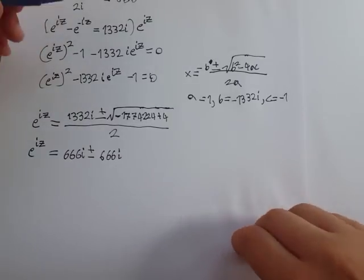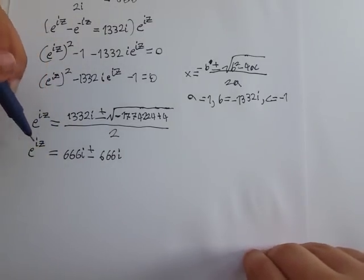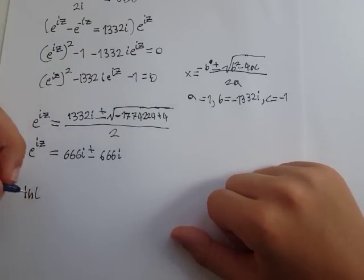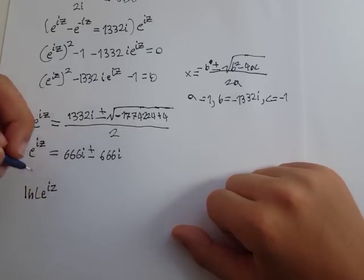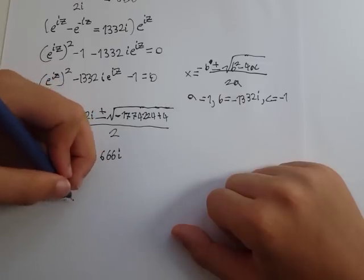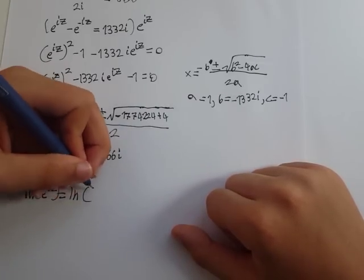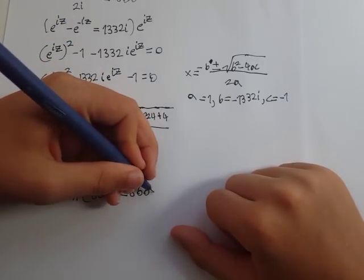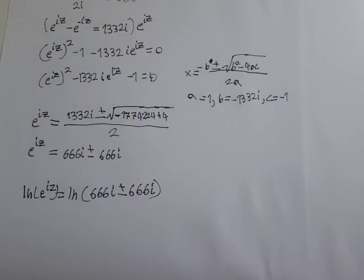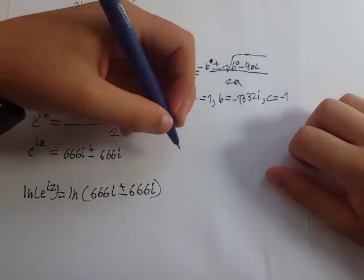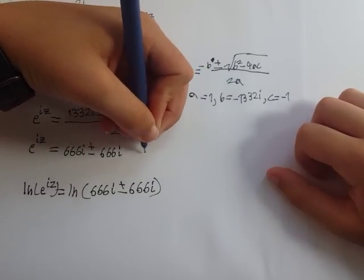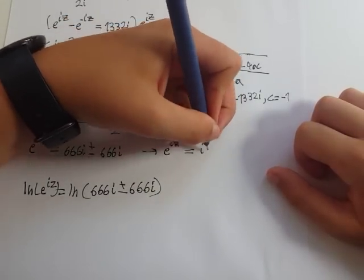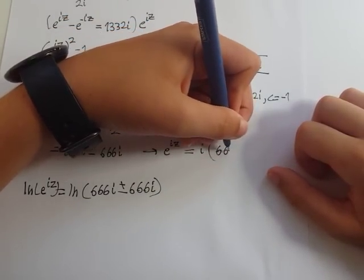To find z, we're going to first take the natural log of both sides. So natural log of e to the iz equals natural log of 666i plus or minus 666i. To make things easier, we're going to factor out the i's: i times 666 plus or minus 666.